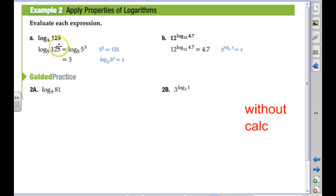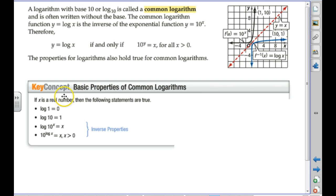So, let's try these. They did 5 to what power is 125? Can we do that without a calculator? 5 times 5 is 25, times 5 is 125, so it was 3. What about this one? I can't do that without a calculator. Oh, wait. Yes, I can. Because 12 to the log base 12 undoes each other, exponent and log, so we just ended up with 4.7. So, this is 9 to what power is 81? 2. And 3 to the log base 3 undoes each other, so we just get 1.